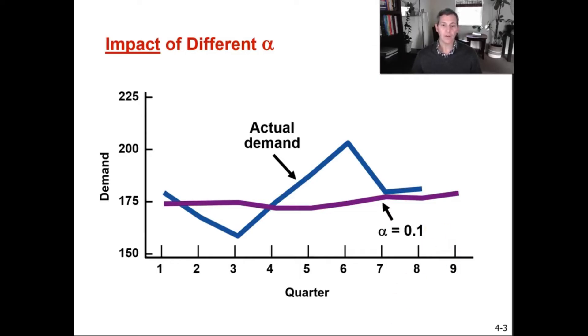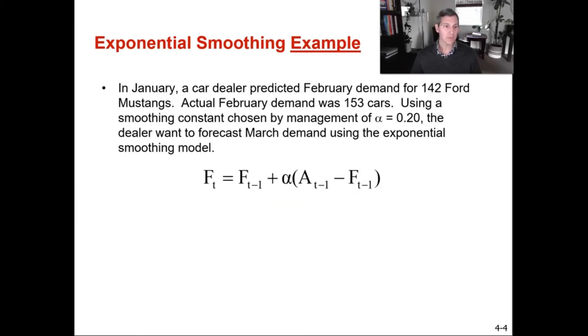If you were to pick an alpha closer to one, then it would be more responsive to the changes. So you can see it went down faster and then it went up faster. So with a smoothing constant of 0.5 in this example, it was more responsive and that's what a closer to one alpha will do. It will adjust quicker to changes in demand. So let's do an example together of exponential smoothing.